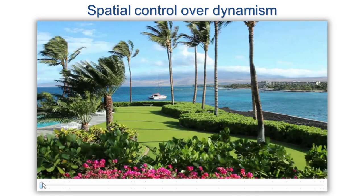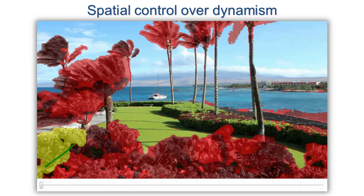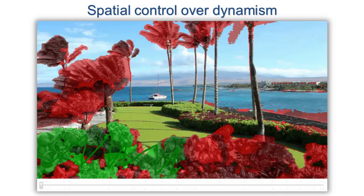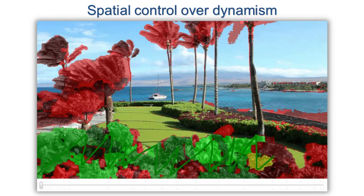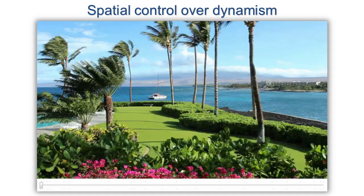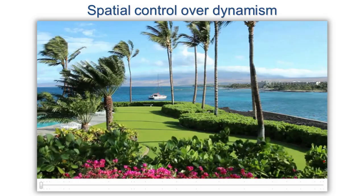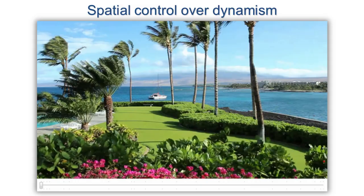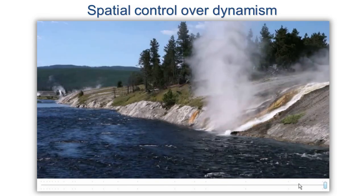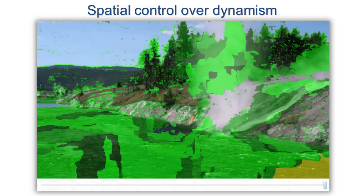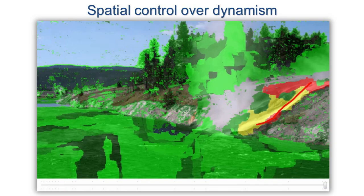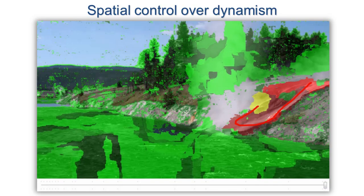Here, we start with a static scene and draw a stroke to select regions to activate. Note that the loop remains seamless. In this example, we start with the most dynamic loop and disable animation over the waterfall.